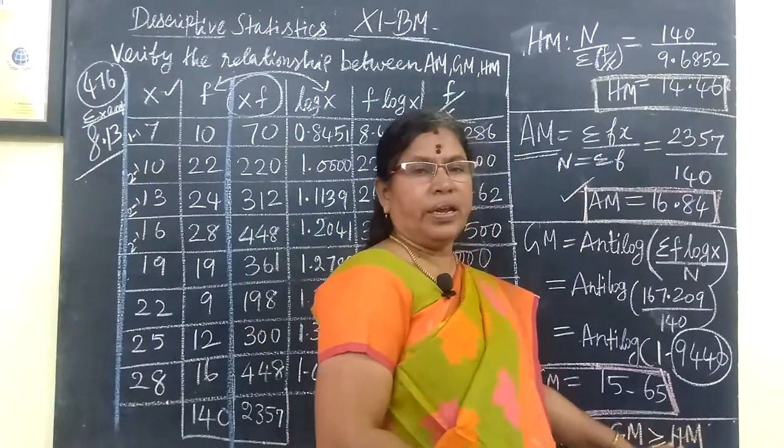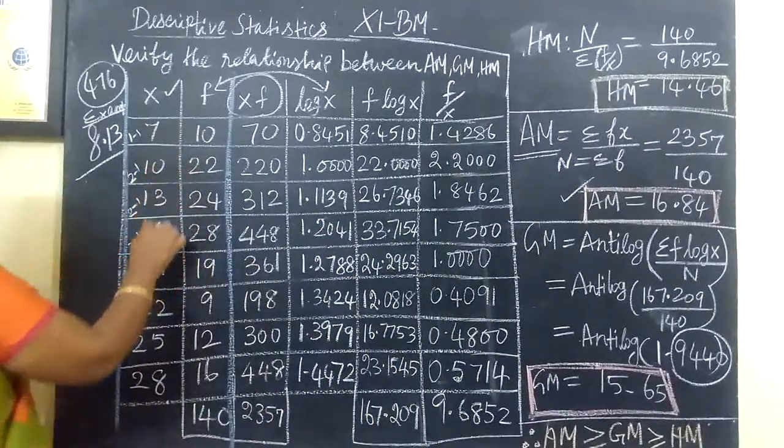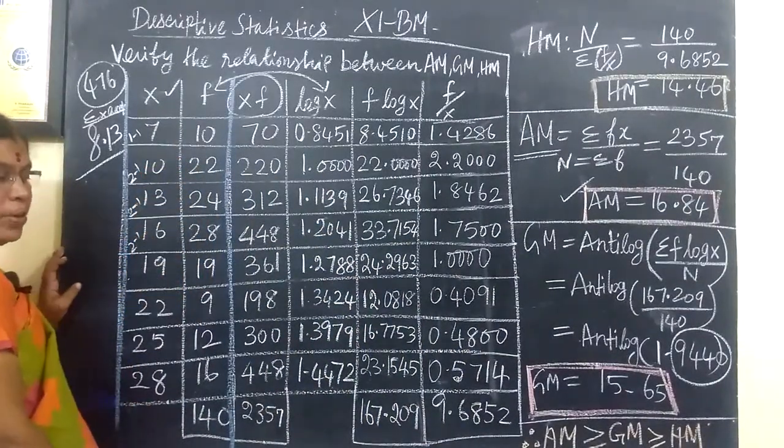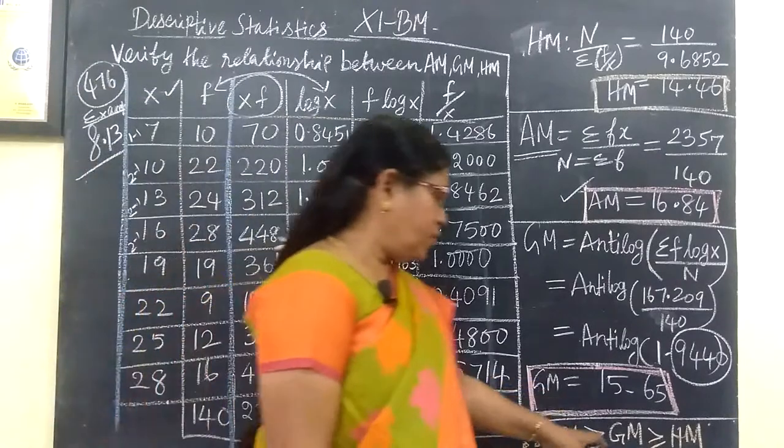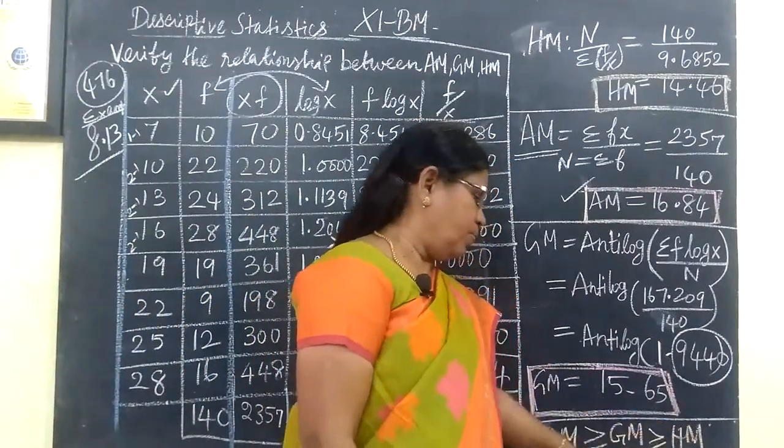When are they equal? When all values are equal, like 7, 7, 7, 7, then arithmetic mean equals geometric mean equals harmonic mean. Thank you.